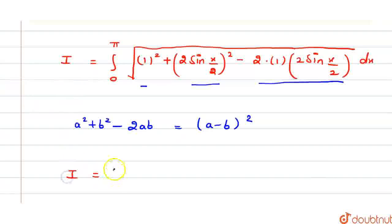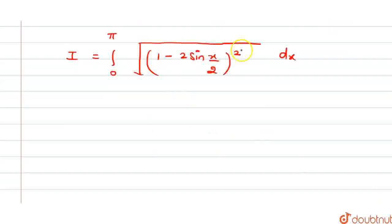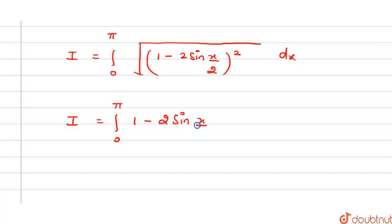I can be written as integral 0 to π under root of (1 - 2 sin x/2)² dx. This square root will get cancelled with the square, and the value of I will be integral 0 to π of (1 - 2 sin x/2) dx.